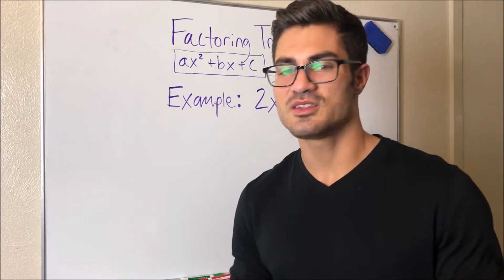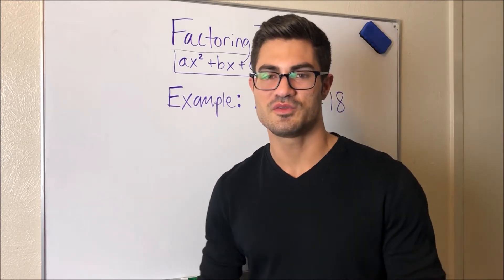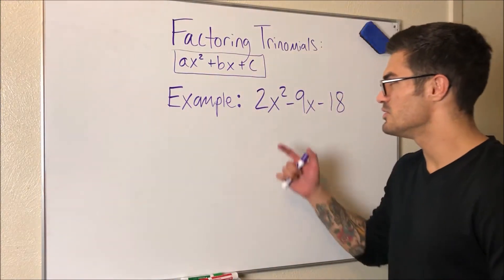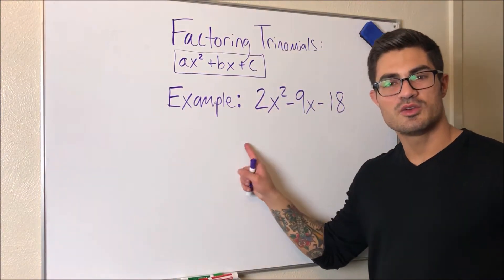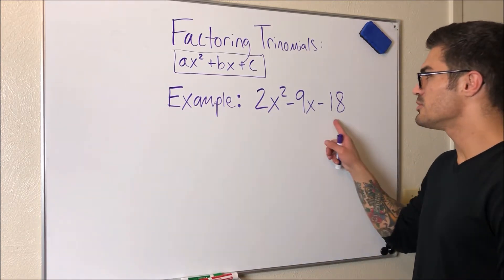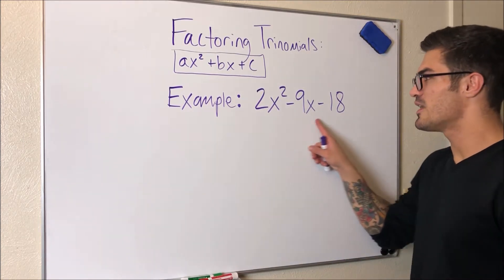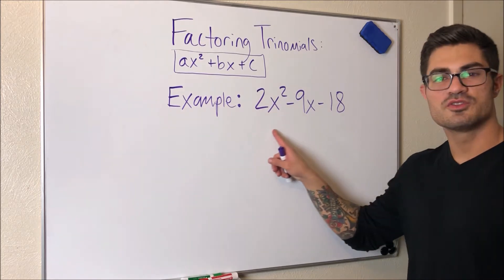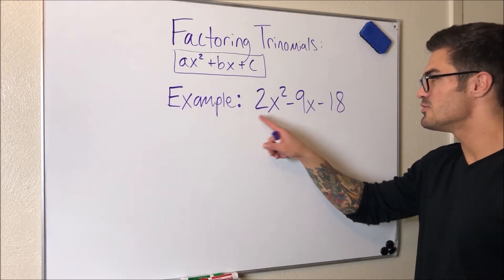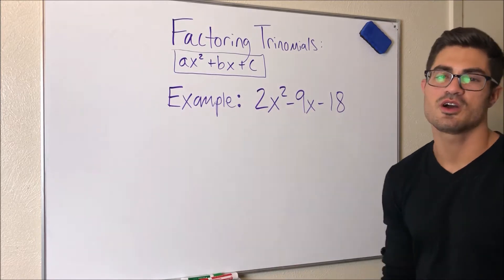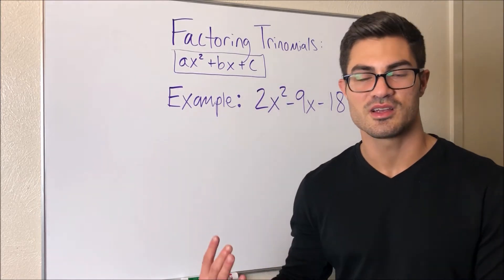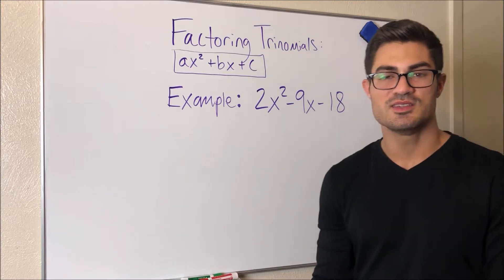We need at least a little bit of knowledge of how to factor by grouping before we use this method. This is the method we use when our A does not equal one, but it's also what we use when we can't take any common factors out of the trinomial. We can't take a two out, we can't take a three out — there's no common factors we can take out of all three terms. So we're kind of stuck, and that's when we use the AC method.